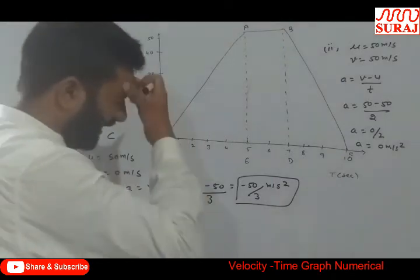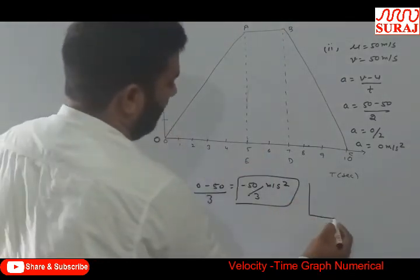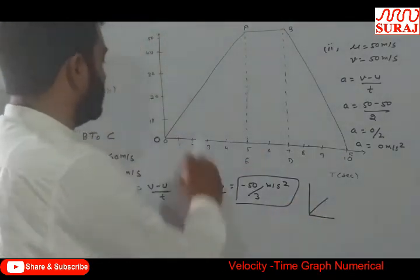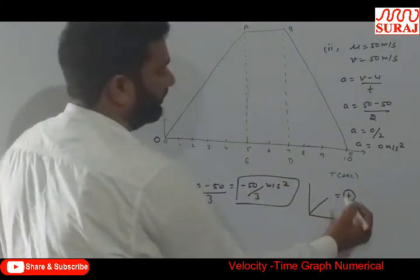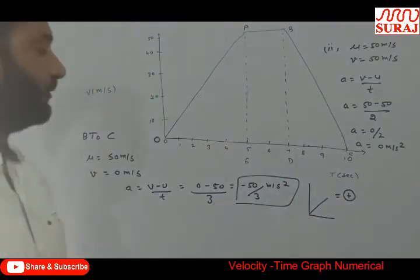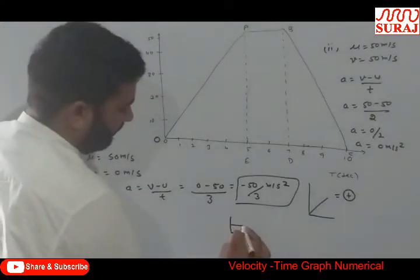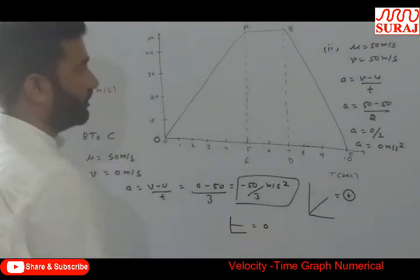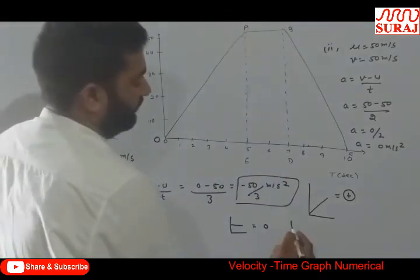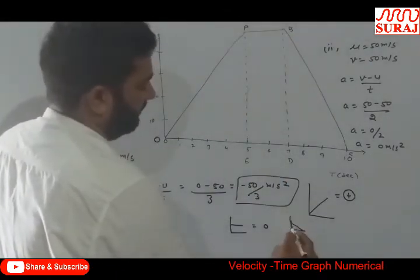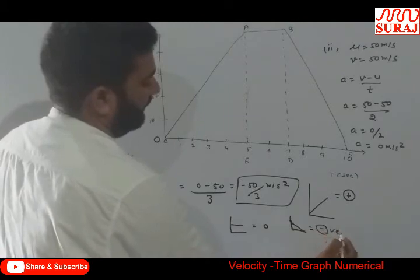My dear students, here I want to say that if you have such type of slope from O to A, then the acceleration will be always positive. Or the gradient will be positive. Or the slope will be positive. If you have this type of slope, then it will be equal to 0 from A to B. And if you have this type, then it will become negative.